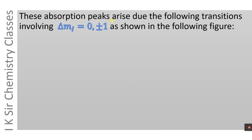These two absorption peaks arise due to transitions involving ΔMi equals zero and plus or minus one. Only those transitions between nuclear spin orientation energy levels are permissible which involve ΔMi equals zero or plus or minus one, and the origin of these two absorption peaks is illustrated in the following figure.